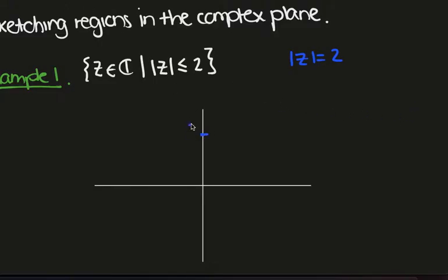So we have here as 2i, here as 2 on the real axis, here's the imaginary axis, and we'll have minus 2 and minus 2i.